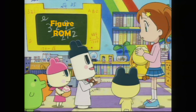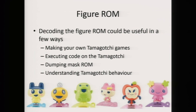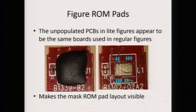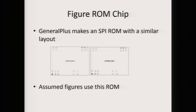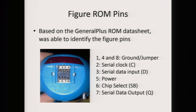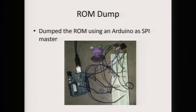The next thing I did was look at the figure ROM, which I thought could be useful in a few ways. Maybe I could execute code on the Tamagotchi, make my own Tamagotchi games, or better understand the Tamagotchi behavior. To figure out what was inside a figure, I scraped off the solder mask of the unpopulated PCB, compared it to a bunch of pad layouts, and it turned out to be an SPI ROM by the same company that made the microcontroller — General Plus. This allowed me to figure out the pinouts on the figure interface, which in turn allowed me to dump a figure.